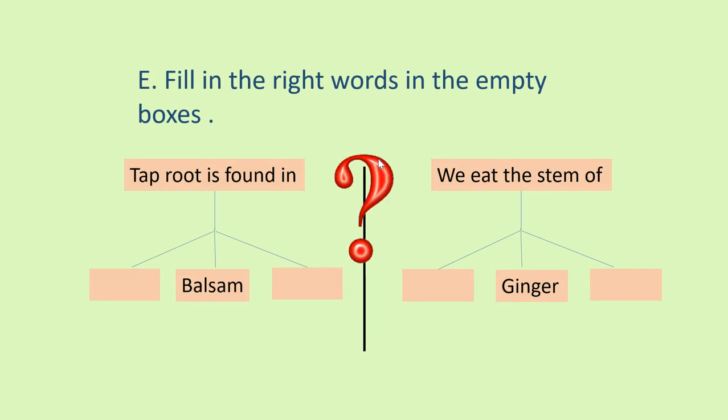E part. Fill in the right words in the empty boxes. Tap root is found in blank blank. You are given two blanks here. And only one answer is given to you. That is balsam. You have to think about these two. Another two examples. And here, we eat the stem of ginger. Only one answer ginger is given to you. Now, you have to think about two more names.